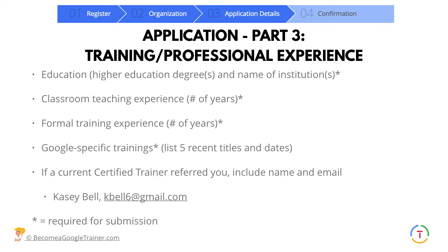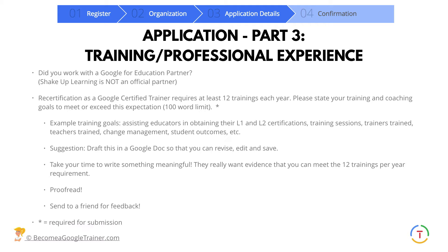If a current certified trainer referred you, you can include their name and email. And if you have worked with a Google for Education partner, you would put that there as well — Shake Up Learning is not an official partner, so if you worked with another company that is, you'd list that.